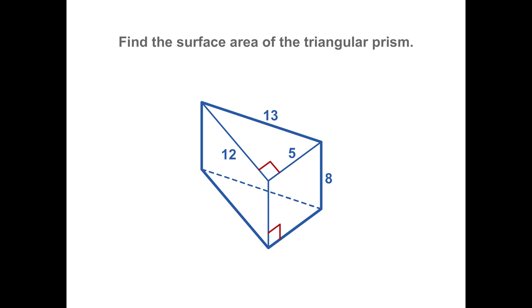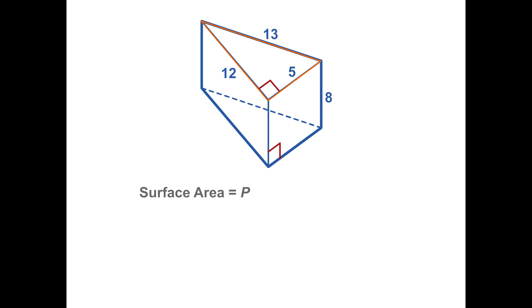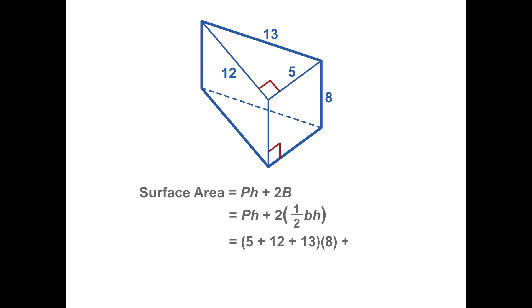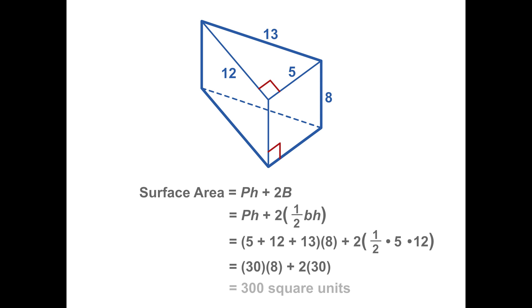In this problem, find the surface area of the triangular prism. To calculate surface area, we need the perimeter of the base, the height of the prism, and the area of the base. The base of this prism is a triangle, so the area formula is one-half base times height. Be careful here — there are two different heights in this formula: one is the height of the prism, 8, and the other is the height of the triangle, 12. When we substitute these values, the total surface area is 300 square units.